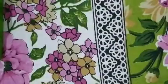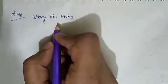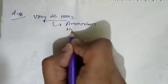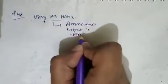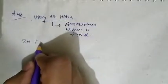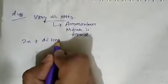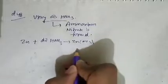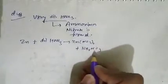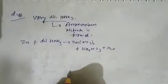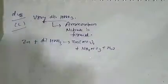Question number 48: the reaction of zinc with cold and very dilute HNO3. When very dilute HNO3 is used, ammonium nitrate will form. So when zinc reacts with very dilute HNO3, it forms zinc nitrate along with ammonium nitrate plus water. Question number 48, option C is correct.